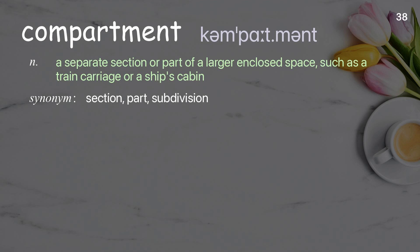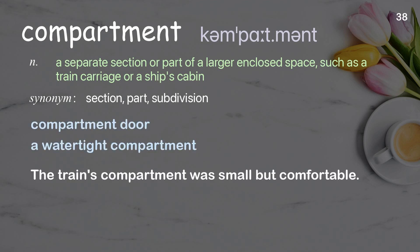Compartment: a separate section or part of a larger enclosed space, such as a train carriage or a ship's cabin. Examples: compartment door, a watertight compartment. The train's compartment was small but comfortable.